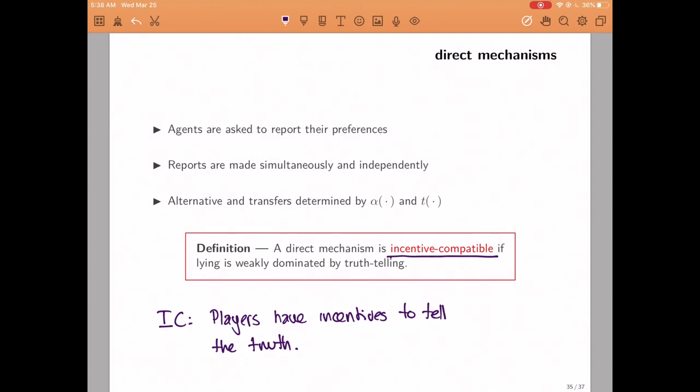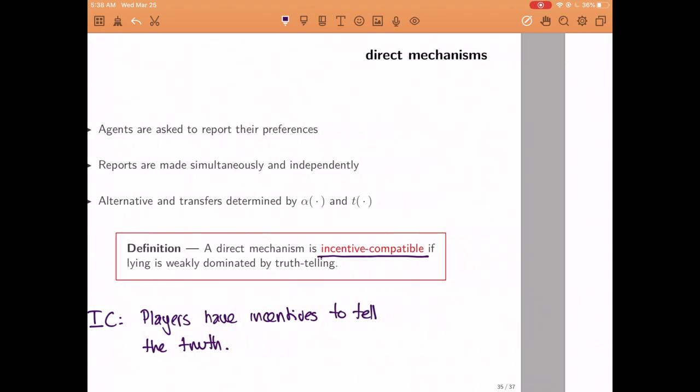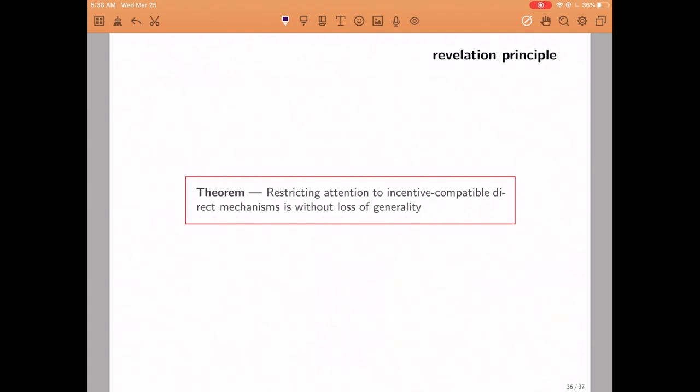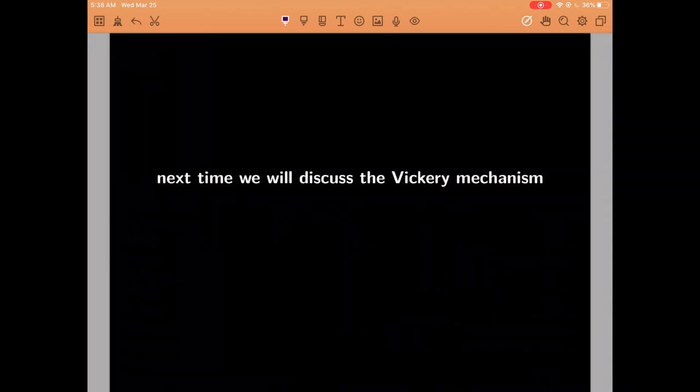All right, and now we are finally positioned to state the revelation principle, which is the result that makes mechanism design possible to begin with. The revelation principle is going to tell us that restricting attention to direct incentive compatible mechanisms is without loss of generality. If we can find some mechanism that's potentially very complicated that delivers the outcome that we want, then we can also find an incentive compatible direct mechanism that delivers exactly the same outcome. So for the rest of the semester, we're going to focus only on this restrictive class of mechanisms to try to search for a mechanism that achieves Pareto efficiency. And we're going to start by talking about the famous mechanism known as the Vickrey mechanism.